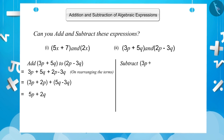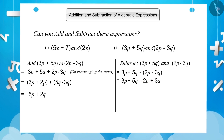For the subtraction of 3p plus 5q and 2p minus 3q: we write 3p plus 5q minus (2p minus 3q). When eliminating the brackets in subtraction, the sign of the terms inside the bracket changes. So we get 3p plus 5q minus 2p plus 3q. Rearranging the like terms: (3p minus 2p) plus (5q plus 3q). By combining like terms, we get 1p plus 8q.